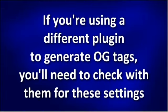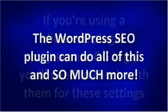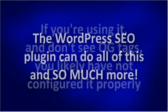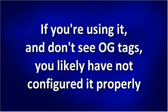Now if you're using a different plugin for your Open Graph tags or social profile connections, you'll want to check with the developer to see how they want this set up. The WordPress SEO plugin can do all of this and so much more for you. If you don't see any OG tags, then you probably don't have the social part of that plugin turned on or properly configured.